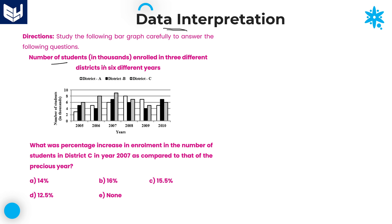The bar graph shows the number of students enrolled in 3 different districts in 6 different years. The information is about how many students are enrolled from District A, District B, and District C — these are the 3 different districts — over the years from 2005 to 2010.